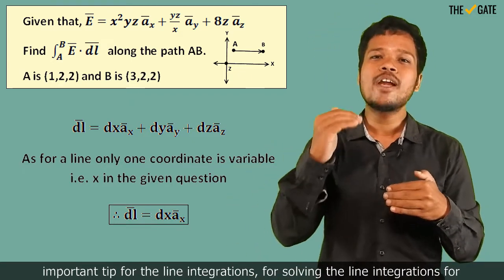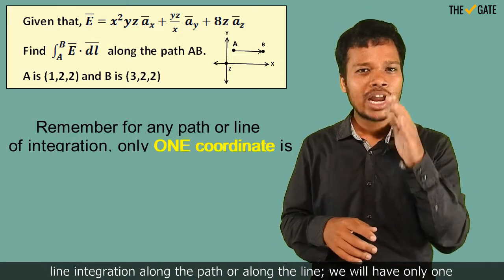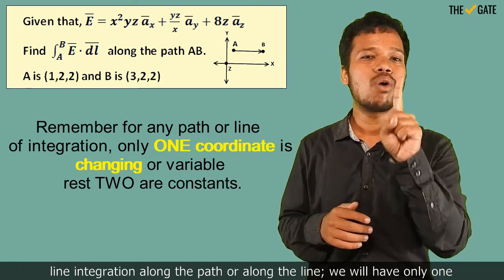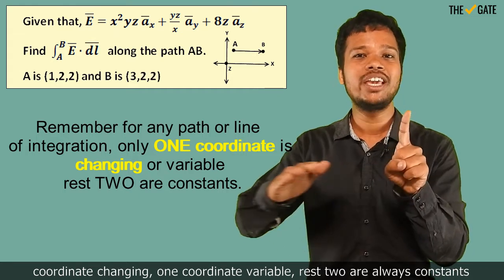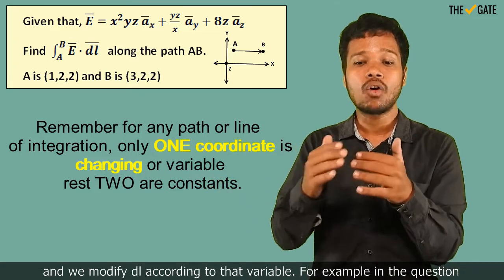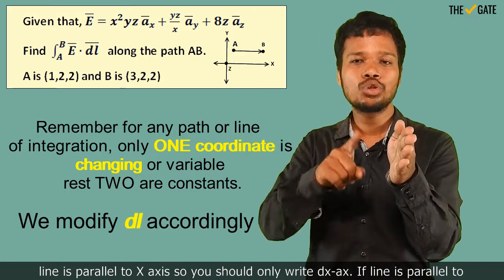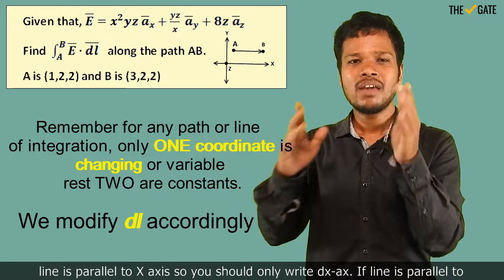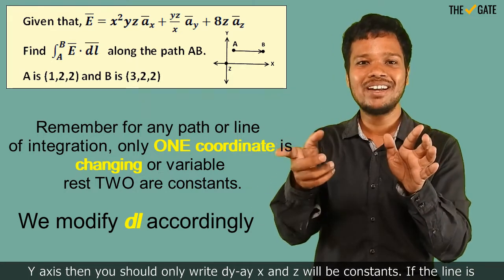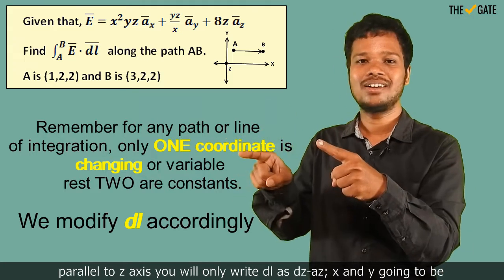So here is your very important tip for solving line integrations: for line integration along the path or along the line, we will have only one coordinate changing, one coordinate variable, and the rest two are always constants. And we modify dl according to that variable. For example, if in the question the line is parallel to the x-axis, you should only write dx ax. If the line is parallel to the y-axis, then you should only write dy ay; x and z will be constants. If the line is parallel to the z-axis, you will only write dl as dz az.